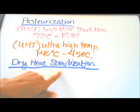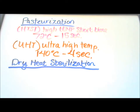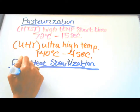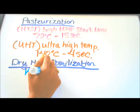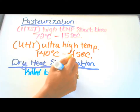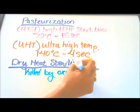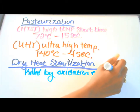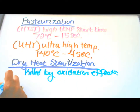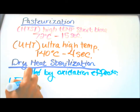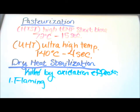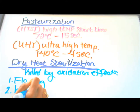Dry heat sterilization — in this method, microbes are killed by oxidation. An example is flaming: flaming sterilizes an inoculating loop with fire, it incinerates and disposes of microbes.